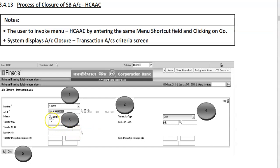Now for balance transfer — this is very important. If the customer wants their amount in cash, select transaction type as Cash. If the amount needs to be transferred to another account in another bank, you can choose ECS or the transfer option. Here we have chosen Cash, then click on Go.